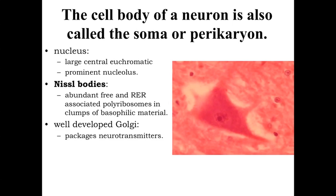In the cytoplasm, we see very abundant free and rough endoplasmic reticulum-associated polyribosomes, which clump together into basophilic material referred to as Nissl bodies. Free ribosomes synthesize cytoplasmic proteins, while the rough endoplasmic reticulum produces proteins embedded in membranes or secreted from the cell. Neurons also have a well-developed Golgi apparatus — often difficult to see in H&E-stained sections — used for synthesizing and secreting a large number of neurotransmitters and the enzymes needed to produce them.